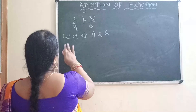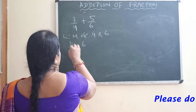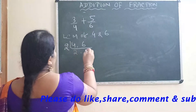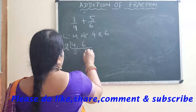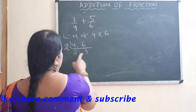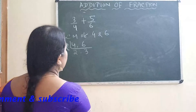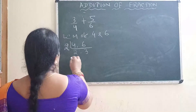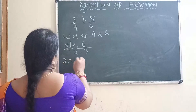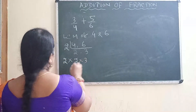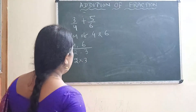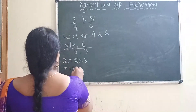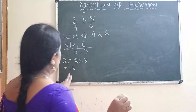To find the LCM of 4 and 6: divide both by 2 — you get 2 and 3. Since 2 and 3 are prime numbers, you cannot proceed further. Multiply all the values: 2 into 2 into 3. That gives 2 twos are 4, and 4 threes are 12. So the LCM value is 12.